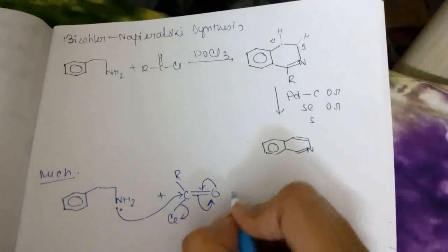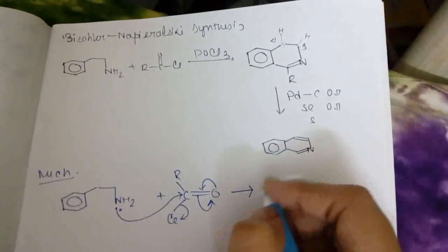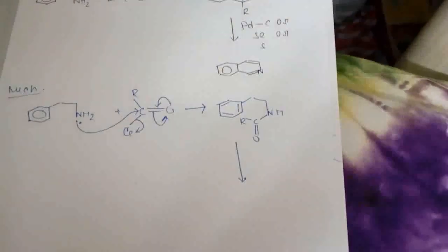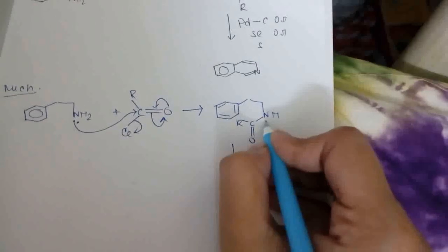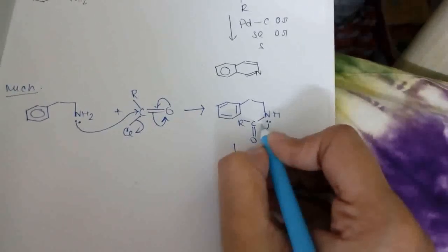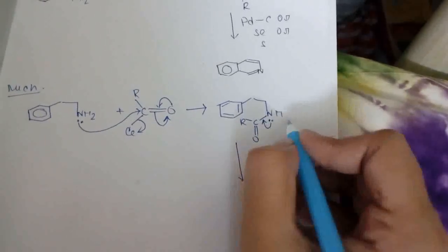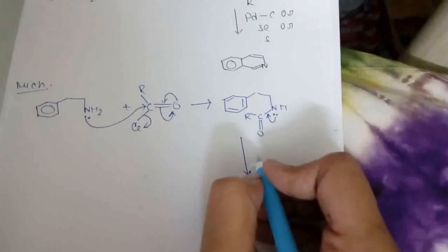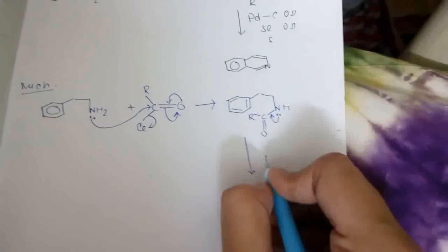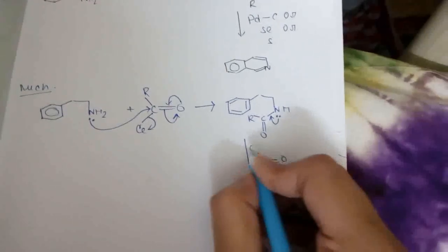Then this lone pair of nitrogen comes to form a double bond and imine bond. And as in the medium POCl3 is present, it is like a Lewis acid which can accept lone pair. So this bond will break and phosphorus accepts a lone pair from oxygen.